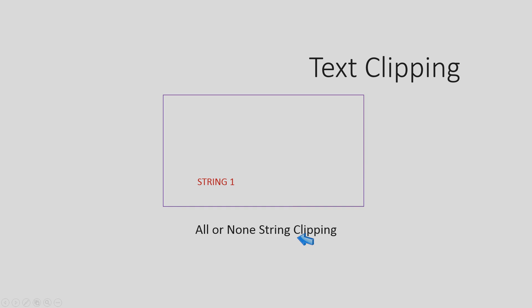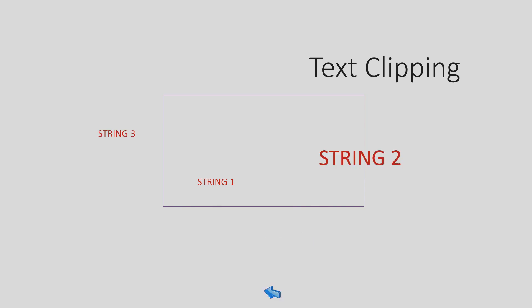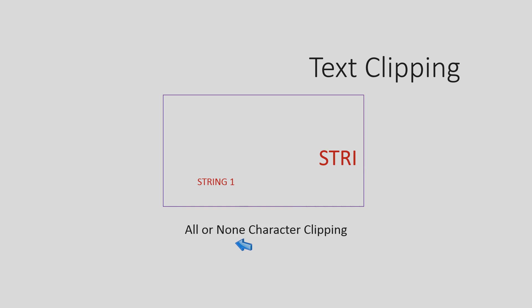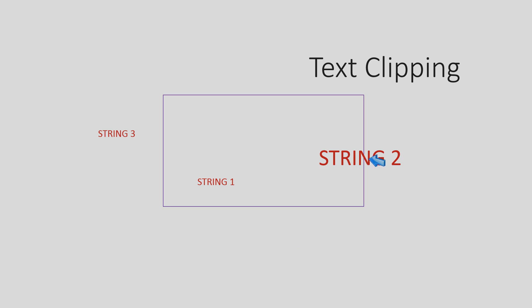So you either accept the whole string or accept none of it. The second case deals with the same strings clipped in a different way. This kind of clipping is known as all-or-none character clipping. In this method, characters that are clashing with the boundary are rejected, characters completely outside the window are rejected, and only the characters which are completely inside the window are accepted.